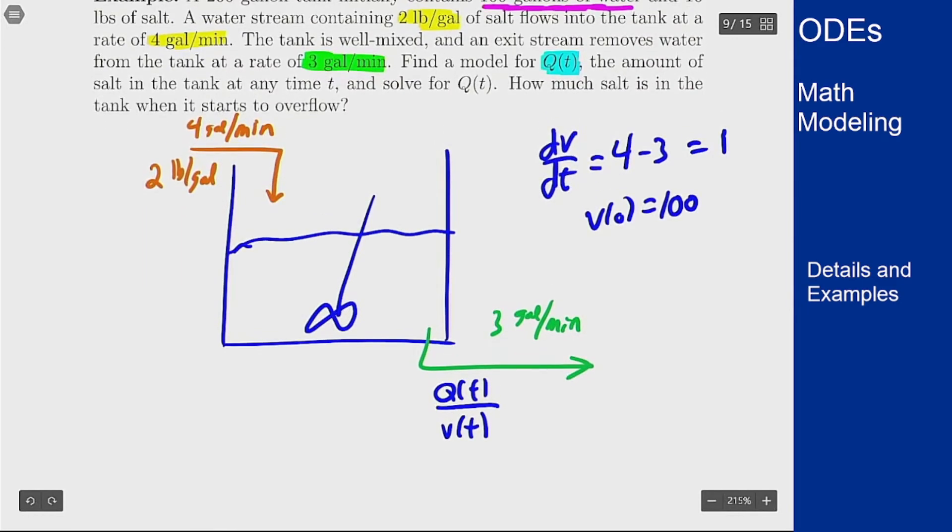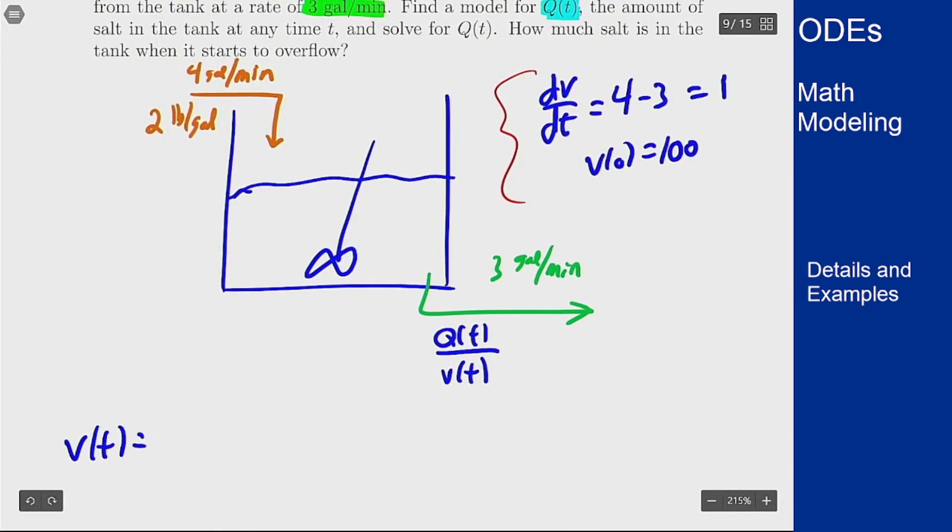Putting these two together and solving the equation gives us that V(t) must be 100 plus t.